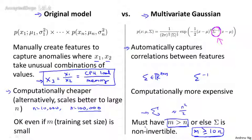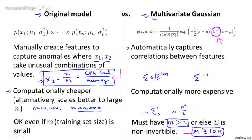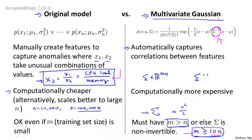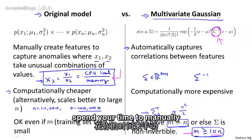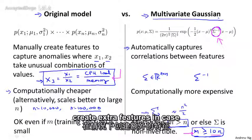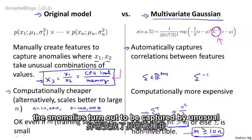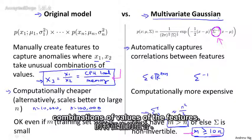In practice, the original model is used more often. If you suspect you need to capture correlations between features, people often manually design extra features to capture specific unusual combinations of values. But in problems where you have a very large training set where m is very large and n is not too large, the multivariate Gaussian model is well worth considering — it may work better and can save you from having to manually create extra features, in case anomalies are captured by unusual combinations of feature values.